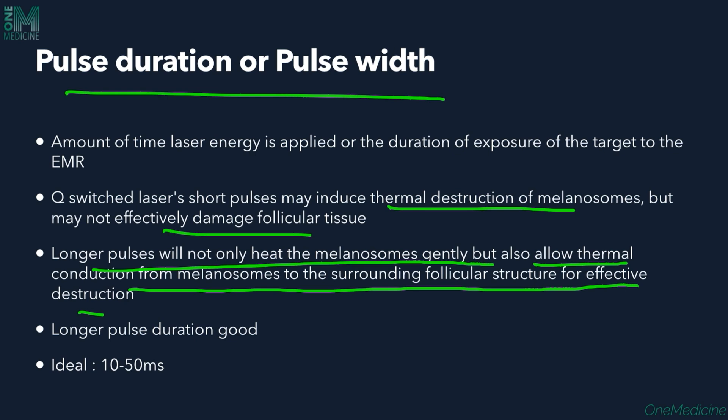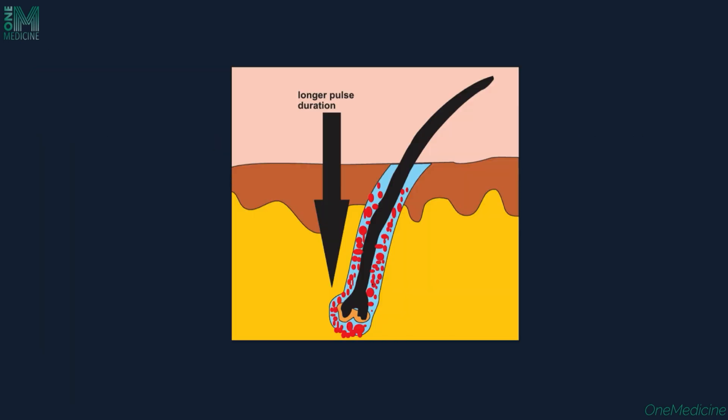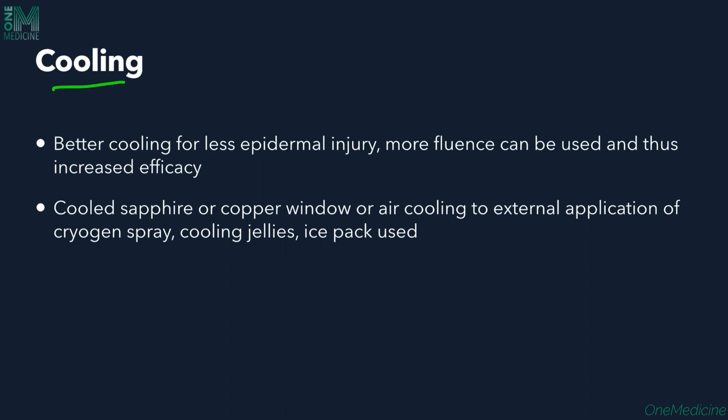Longer pulse duration is a better option — ideal would be around 10 to 50 ms. Effective cooling is again very important in laser hair removal. Better cooling means less epidermal injury. If you cool the tissue before and after giving the pulse, it will effectively prevent any epidermal injury and allow more fluence, giving increased efficacy of treatment. For cooling, cooled sapphire or copper windows, air cooling, external application of cryogen spray, cooling jellies, or ice packs can be used before and after the procedure.